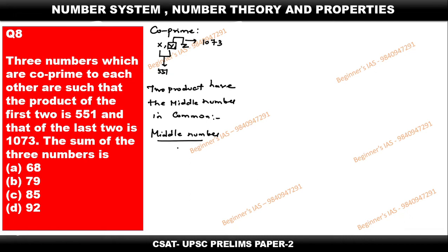To identify the middle number, just take the HCF between 551 and 1073. How to take the HCF between two numbers — this may not be in your NCERT books but listen carefully. Divide the greater number by the smaller number, and proceed until you get remainder 0.